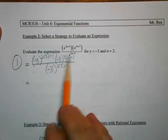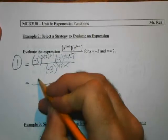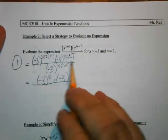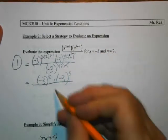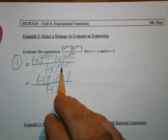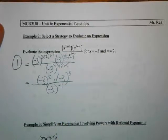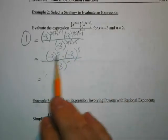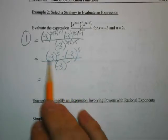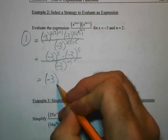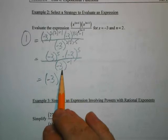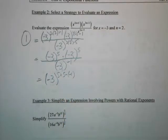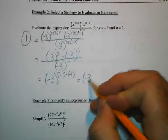Simplifying the exponents first: on the top, I've still got negative 3 to the power of 5, multiplied by negative 3 to the power of 6 minus 1, which is 5. On the bottom, I've got negative 3 to the power of 4 minus 5, which is negative 1. Notice these all have the same base, so I can use the product rule and quotient rule. I'll come up with one term with base negative 3: it's going to be 5 plus 5, then minus negative 1, which gives negative 3 to the power of 11.